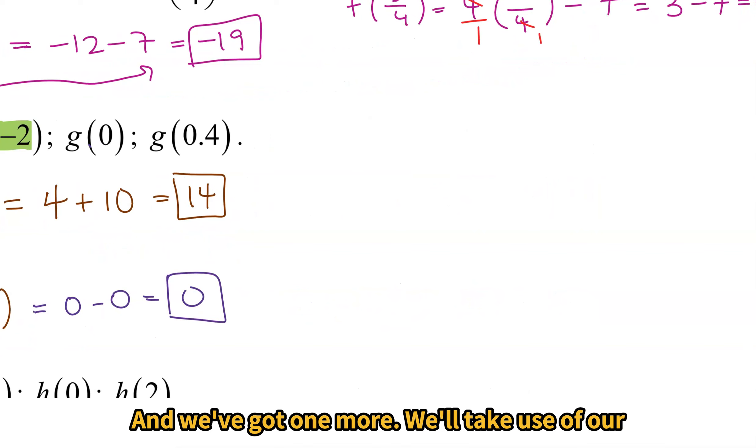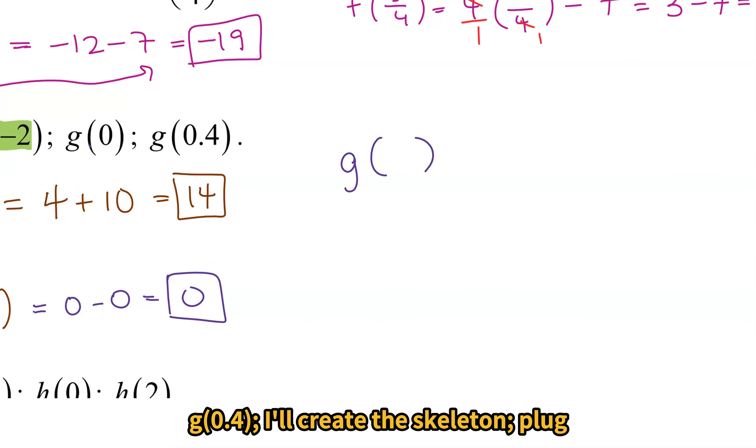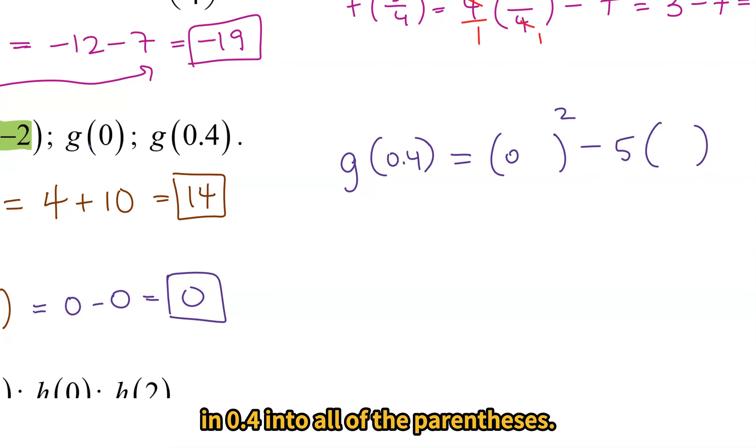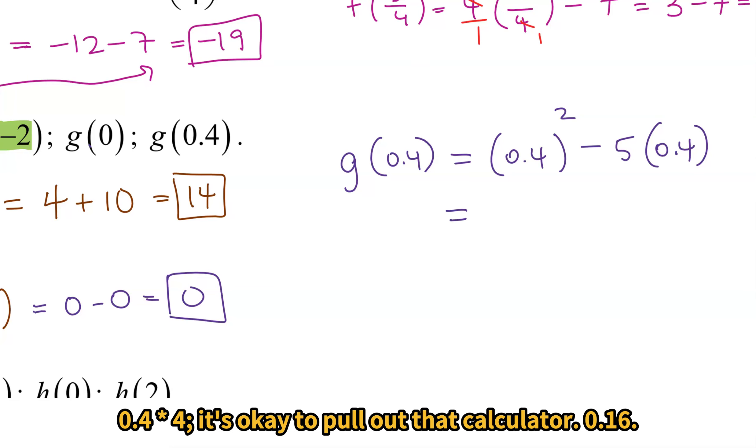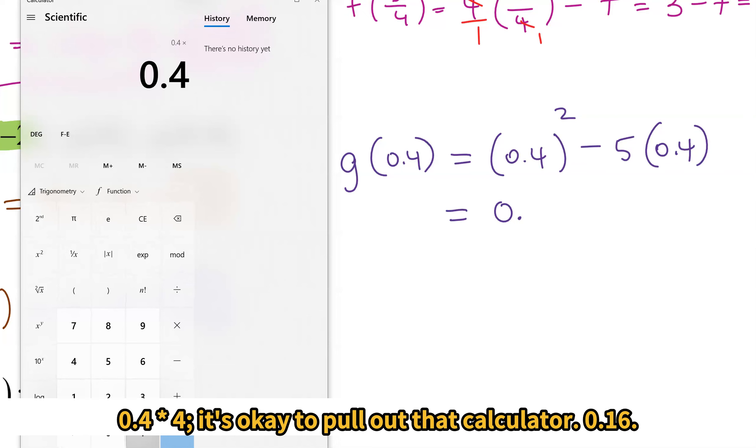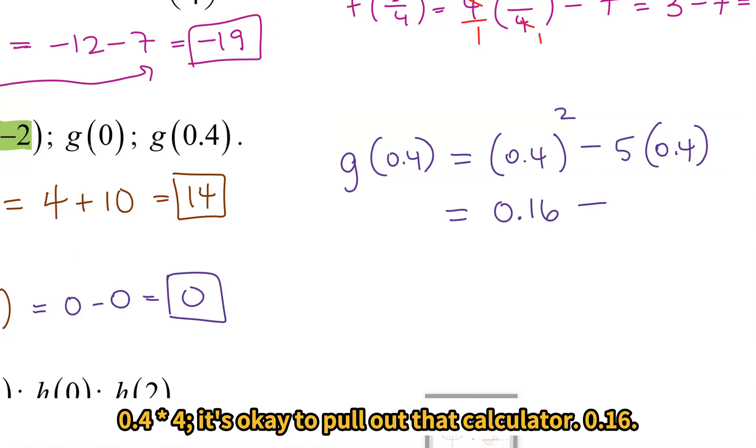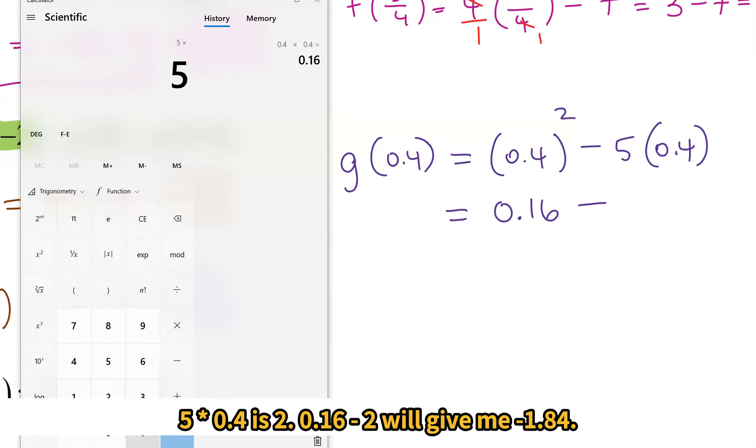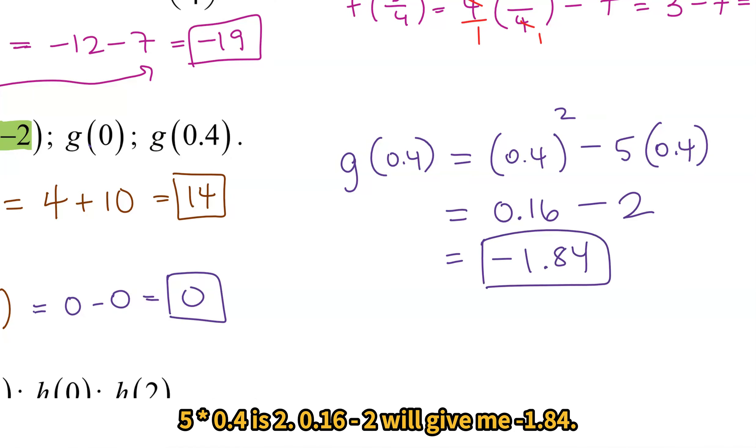And we've got one more. We'll take use of our calculator on this one. g(0.4). I'll create the skeleton. Plug in 0.4 into all of the parentheses. 0.4 times 0.4, it's okay to pull out that calculator. 0.16. 5 times 0.4 is 2. 0.16 - 2 will give me -1.84. It's okay to work with decimals. We got this.